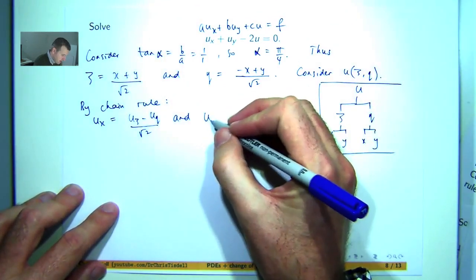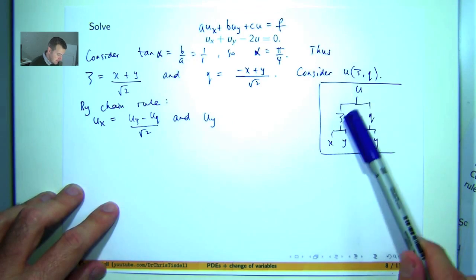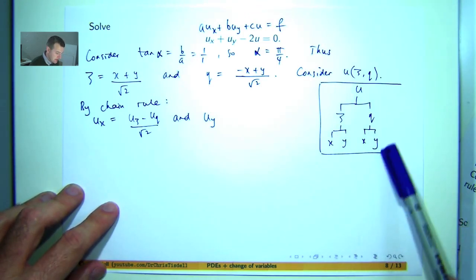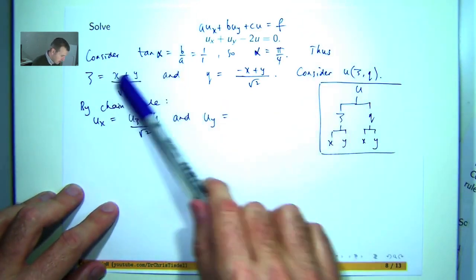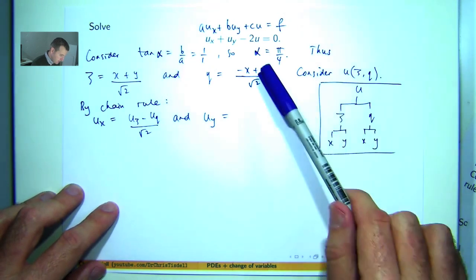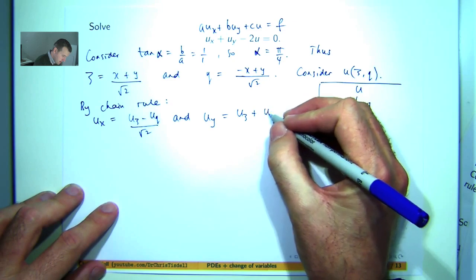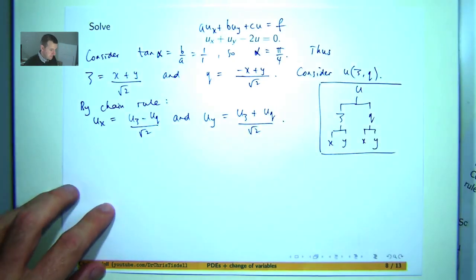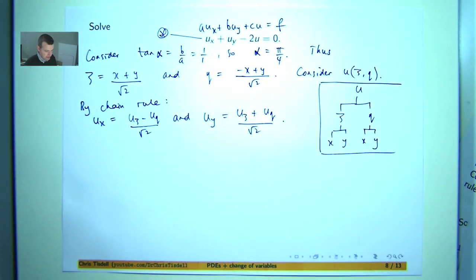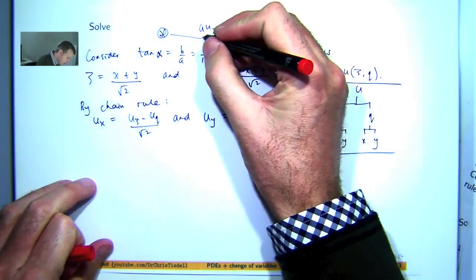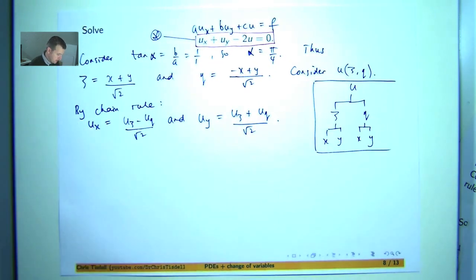Now let's work out u_y by tracing all paths down to y. We get u_psi times psi_y plus u_eta times eta_y. Here psi_y will be 1 over root 2 and eta_y will also be 1 over root 2, so we get the following. Now let's substitute back into our starred PDE — this is where the magic happens, because you should get some cancellation.